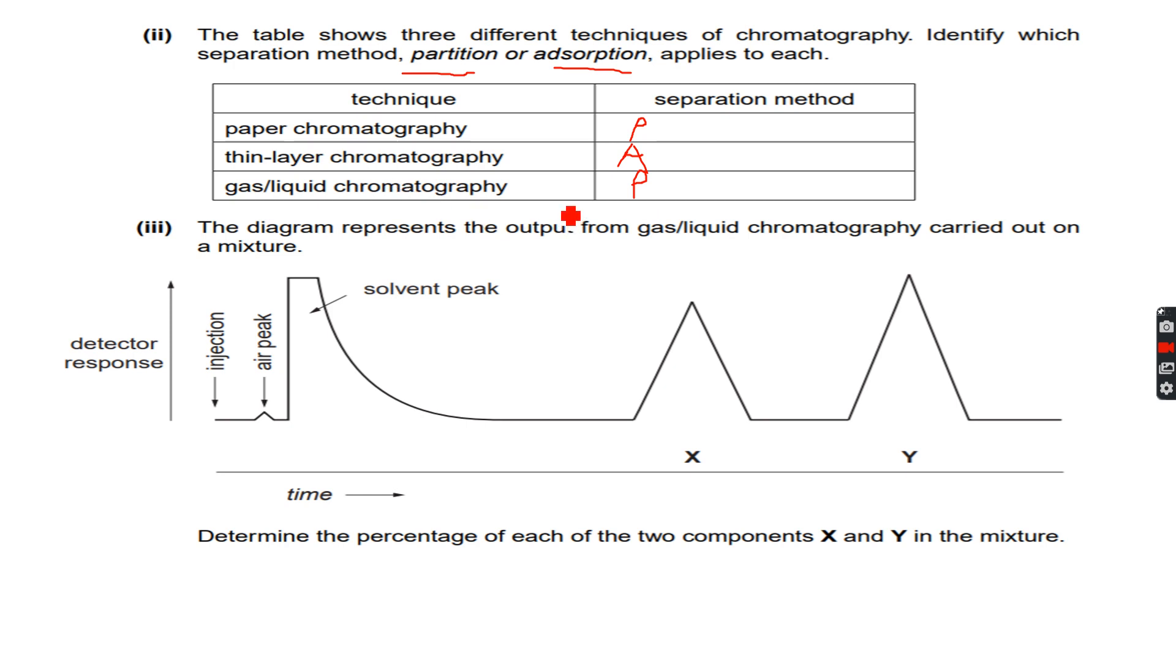Now, the diagram represents the output from gas liquid chromatography carried out on a mixture. So this is the solvent peak. We are not concerned about this. But we got two components from the solute mixture. These were X and Y. These were the two components that we got. So determine the percentage of each of these two components, X and Y, in the mixture.